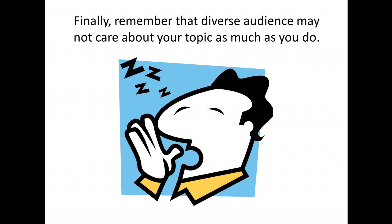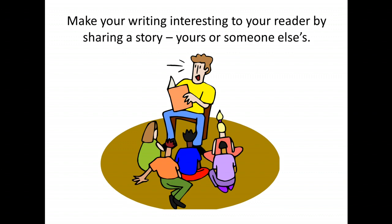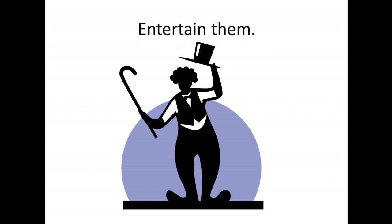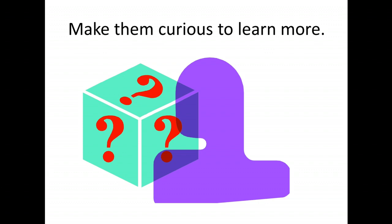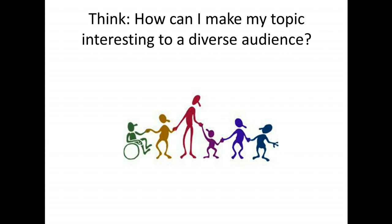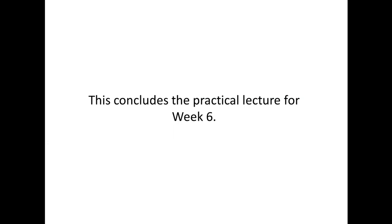Finally, remember that diverse audiences may not care about your topic as much as you do. Make your writing interesting to your reader by sharing a story — yours or someone else's. It's fine to be engaging. Tell your readers why they should care; make them care. Entertain them. Bring them into your argument and make them curious to learn more. Get their attention right away — if the beginning of your paper is dull, it's an uphill battle. The very first part of your paper is extremely important, as is the title. If you get people interested right away, you can build momentum and they'll continue to read. Think: how can I make my topic interesting to a diverse audience? This concludes the practical lecture for Week 6.